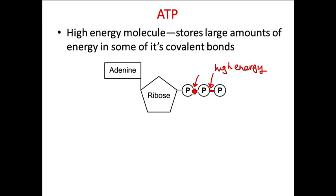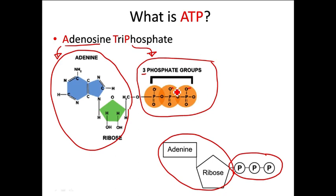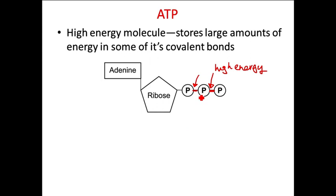See how the phosphate groups each have a negative charge on them? They are all highly negatively charged. And what do we remember about positives and negatives? Positives are attracted to negatives, and negatives are not attracted to other negatives — they are repelled. That means these negative charges on the phosphate groups are actually pushing each other away.